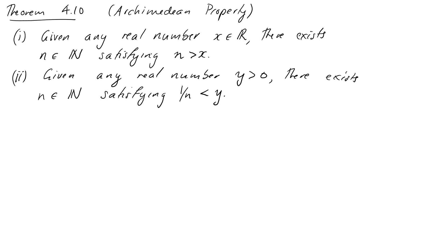The second useful theorem is the Archimedean property of the real numbers. This links together the natural numbers and the real numbers, and it states that given any real number x there is a natural number larger than it. This almost seems too self-evident to prove, but it comes out fairly quickly from our axiom of completeness. Part 2 says that given any positive real number y we can always find a natural number n such that 1/n is less than y; that turns out to be easy once we have part 1.